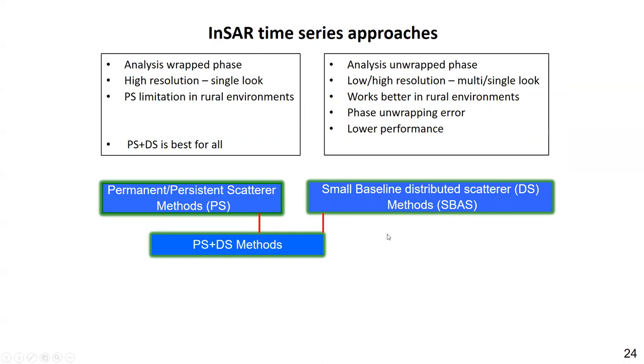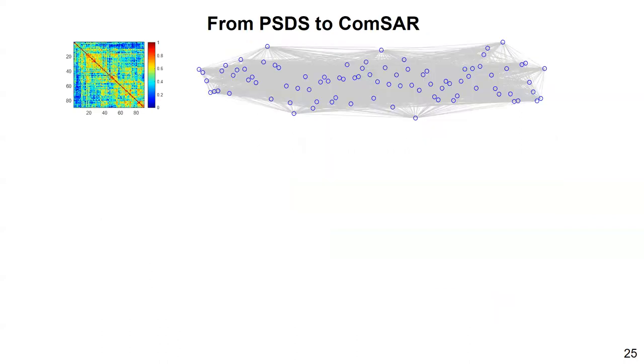For example, we need a better strategy to work on the big data. And recently, we have proposed COMSA, a feasible processing chain to account for both persistent and distributed scatterers in the big data. So let's go into a little bit of the detail. Here is the technique combination. The combination technique is powerful.